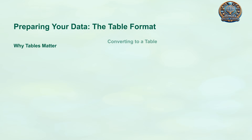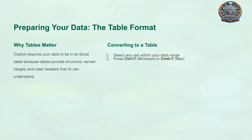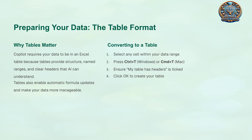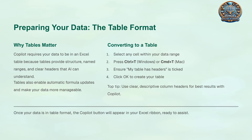Preparing your data in a table format is crucial for Copilot. Tables provide structure and clear headers that the AI can understand. You can easily convert your data by selecting a cell and pressing Ctrl+T or CMD+T.